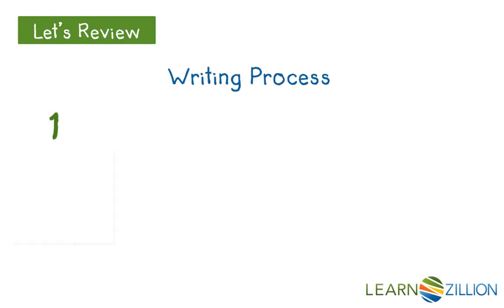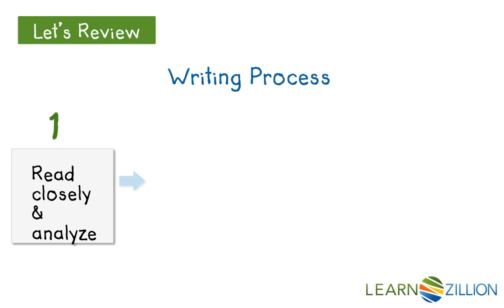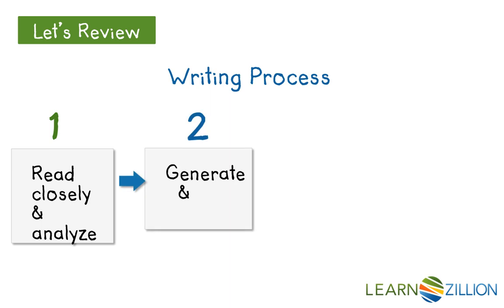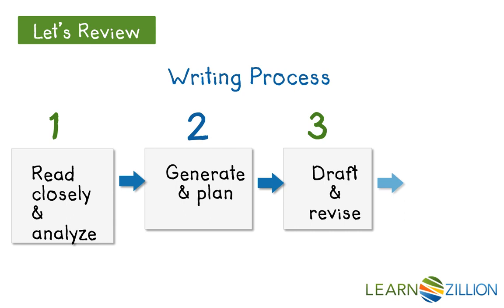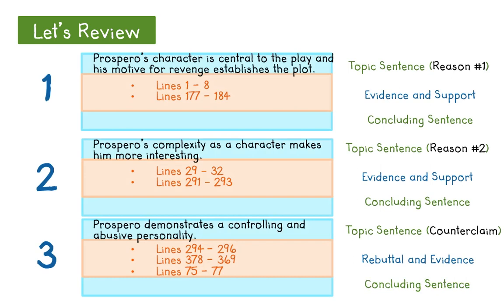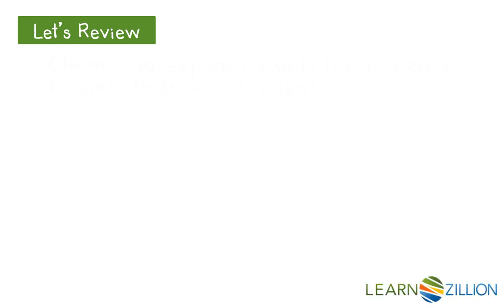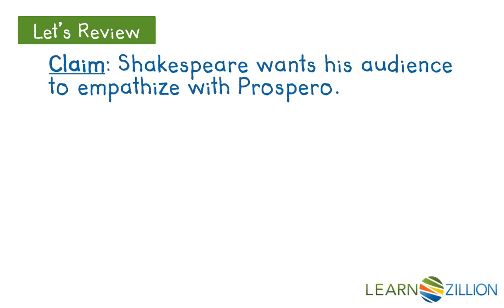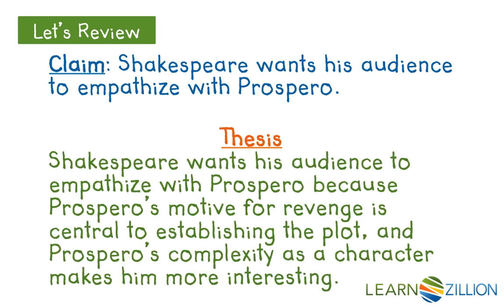Let's review the writing process. First step is to read closely and analyze the text. Second step is to generate and plan what you're about to write. Third step is to draft and revise your writing. Fourth step is to edit and publish what you've written. In this lesson we will begin drafting. We have already created an outline of our body paragraphs and we've taken a position in response to the prompt — our claim — and then we created a thesis from that claim with our two reasons.